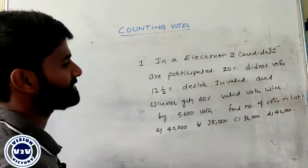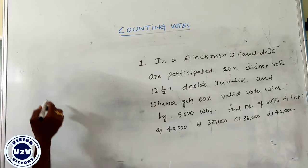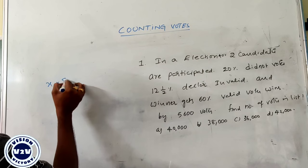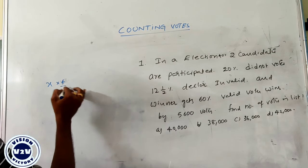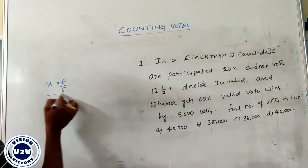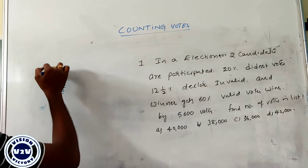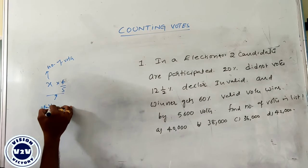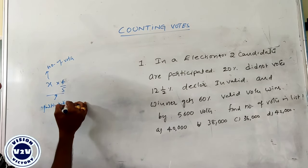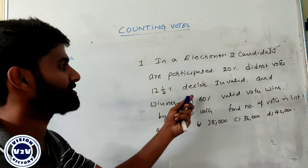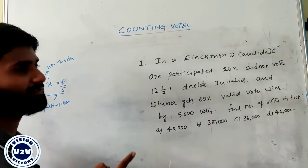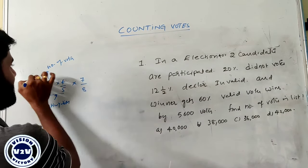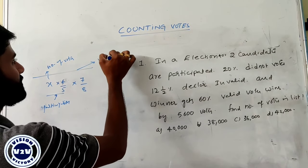In an election, two candidates are participating. 20 percentage did not vote. X is the number of votes. 20 percentage did not vote means we need to consider only 80 percentage, which is 4 by 5 of x as participation votes. Out of participation, 12 and 1 by 2 percent is declared invalid. 12.5 percent declared invalid means 1 by 8 is invalid, so valid votes equal to 7 by 8.